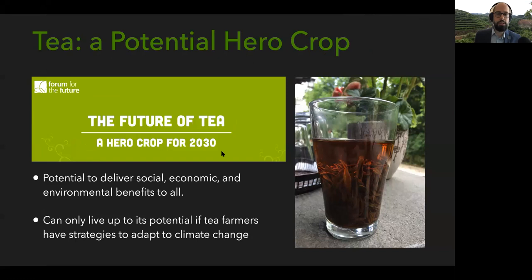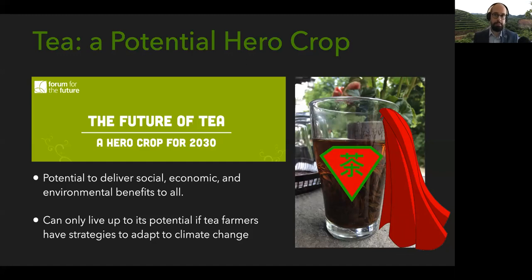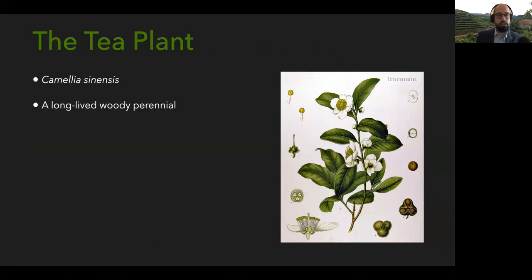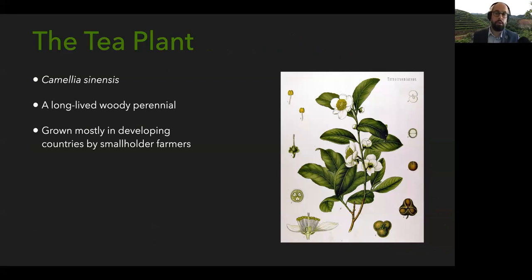A really important first step to allowing tea to live up to its hero crop potential is understanding how the tea plant will be affected by climate change. The tea plant — Latin name Camellia sinensis — is a long-lived woody perennial tree or shrub. It's grown mostly in developing countries by smallholder farmers, which is one of the reasons it has hero crop potential: many people rely on it as an important cash crop.